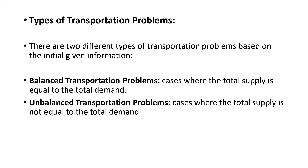There are two types of transportation problems: balanced and unbalanced. If sigma Ai equals sigma Bj, that is a balanced transportation problem. If they are not equal, it is unbalanced. You have to check whether the problem is balanced or not. If balanced, you continue with your work. If unbalanced, you have to make it balanced first and then proceed.